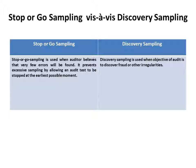Let us discuss stop-or-go sampling and discovery sampling. Stop-or-go sampling is used when the auditor believes that very few errors will be found; it prevents excessive sampling by allowing an audit test to be stopped at the earliest possible moment. Discovery sampling is used when the objective of the audit is to discover fraud or other irregularities. For SISA exam: whenever a term like fraud or major irregularity is given and a sampling technique is to be selected, choose discovery sampling.